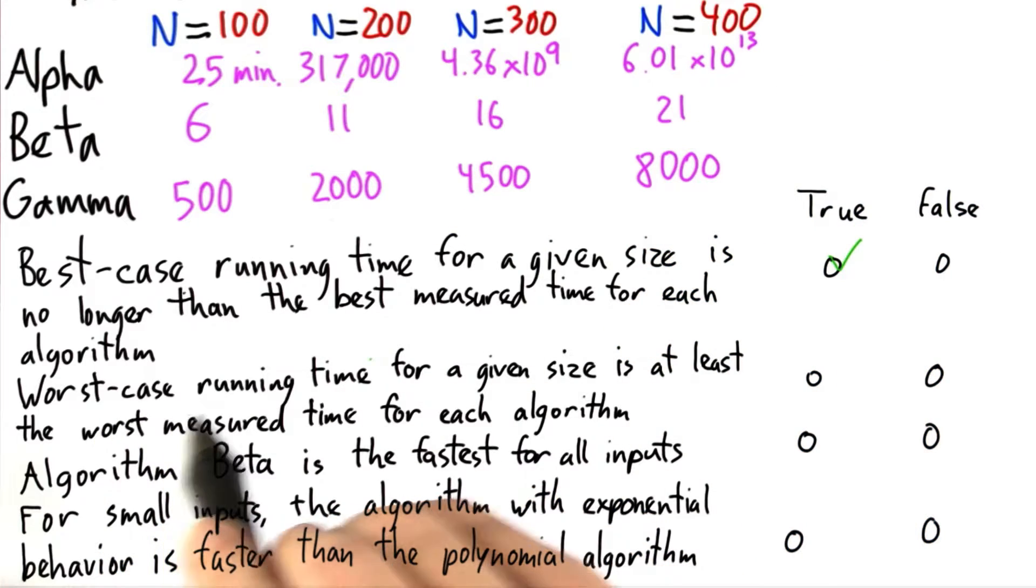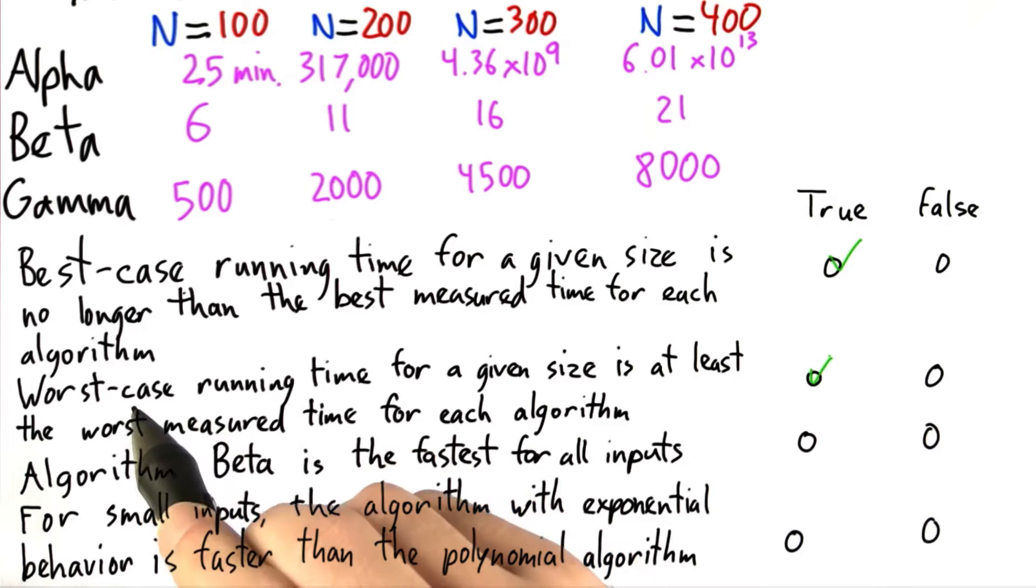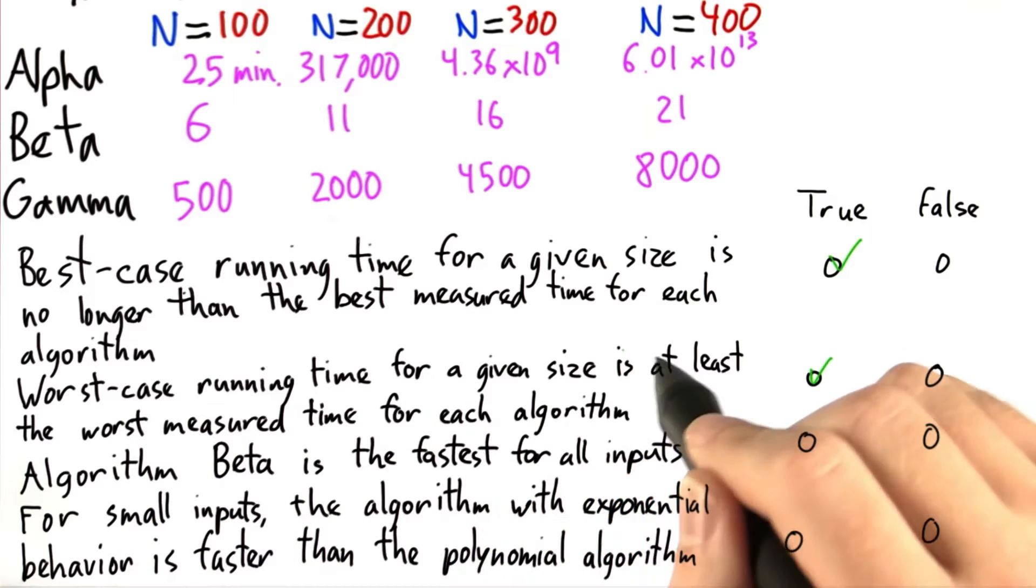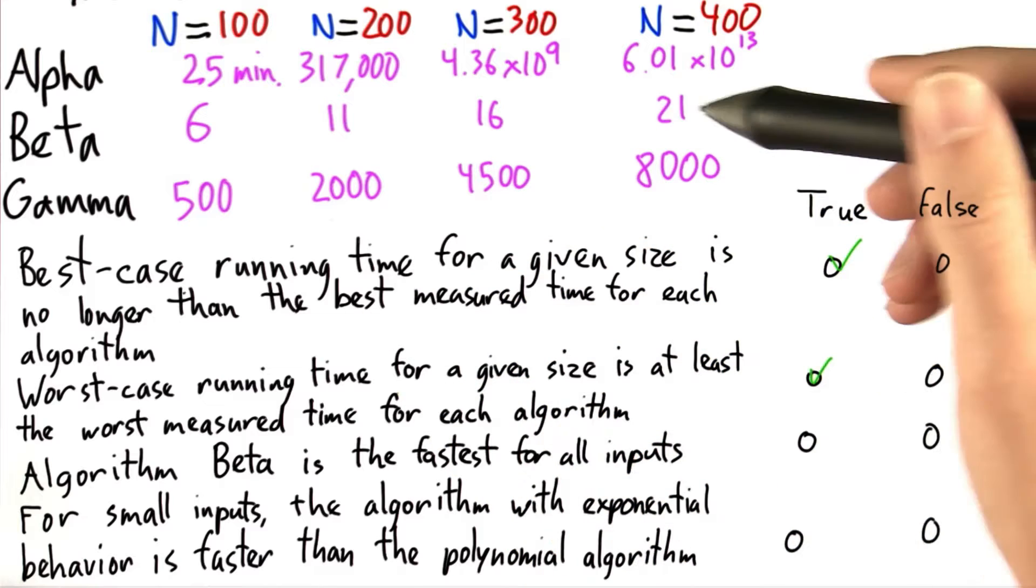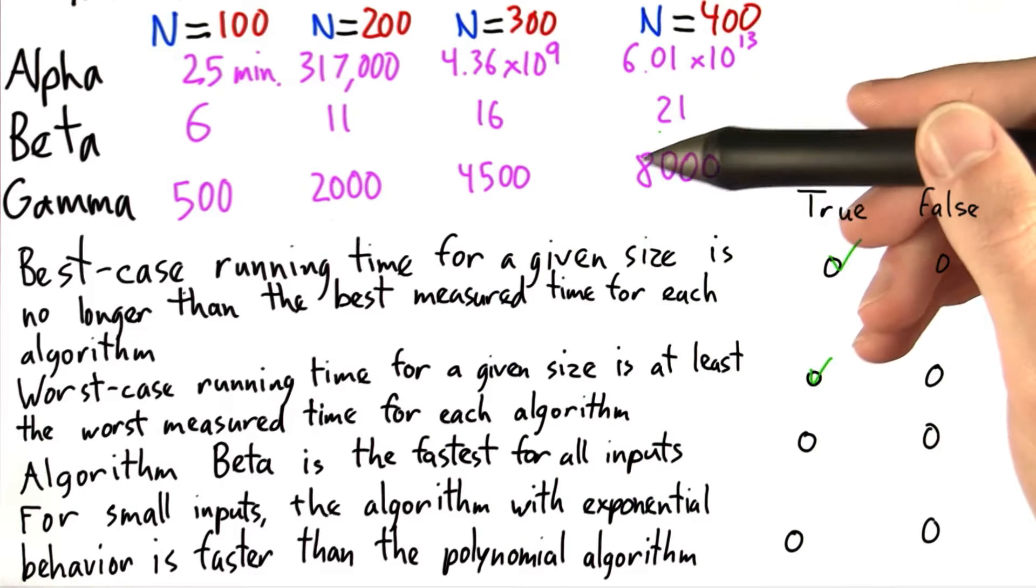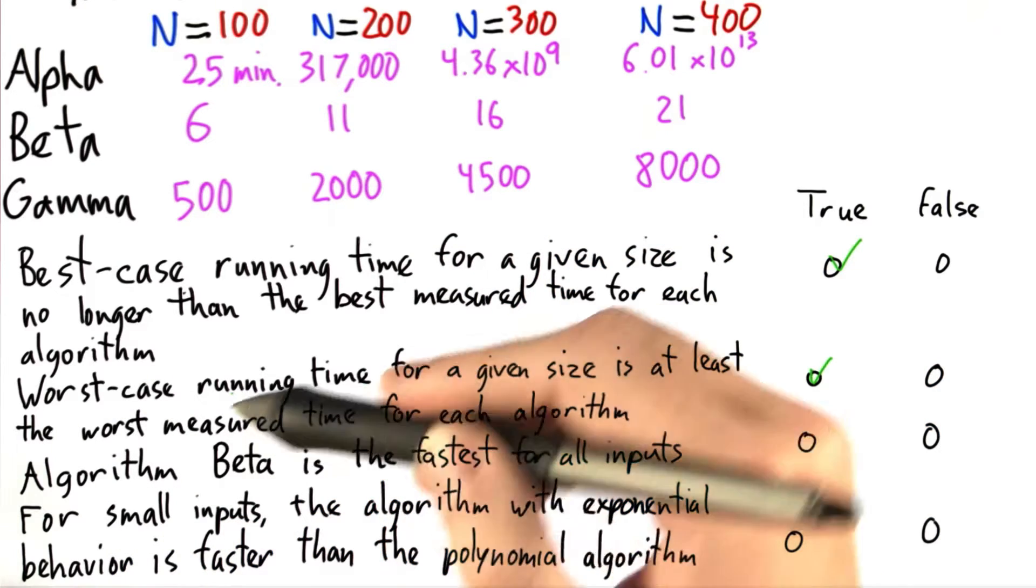And you can think of the same thing for the worst case running time for the second one, which is also true. The worst case running time for a given input size is at least the worst measured time for each algorithm because if there is a worse or longer measured time than the worst case running time, well, then it's not worst, is it?